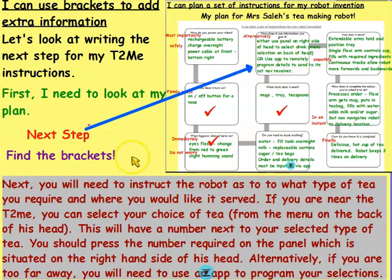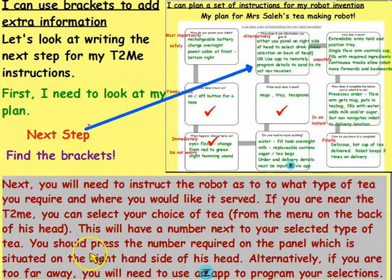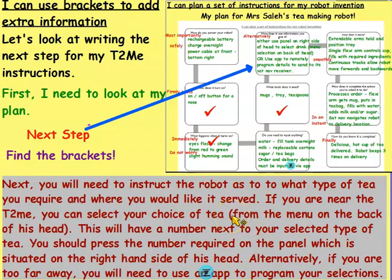Can you find the brackets as I read through? 'Next, you will need to instruct the robot as to what type of tea you require and where you would like it served. If you are near the Tea to Me, you can select your choice of tea from the menu (on the back of his head).' I've used brackets to tell you where you can select your choice of tea. 'This will have a number next to your selected type of tea. You should press the number required on the panel (which is situated on the right-hand side of his head). Alternatively, if you're too far away, you will need to use an app to program your selections.' I've used brackets to add extra information about where the menu is.